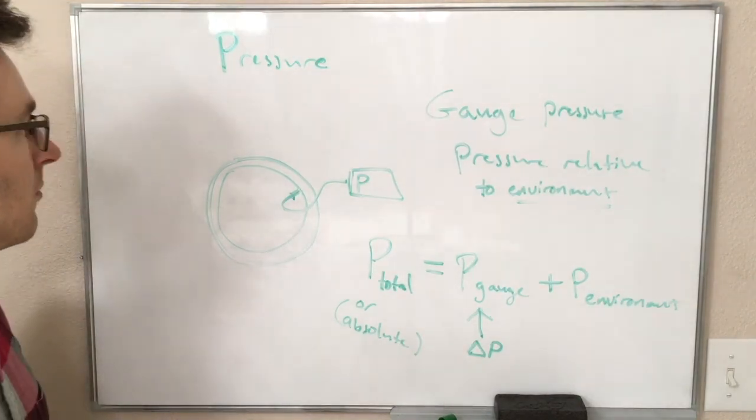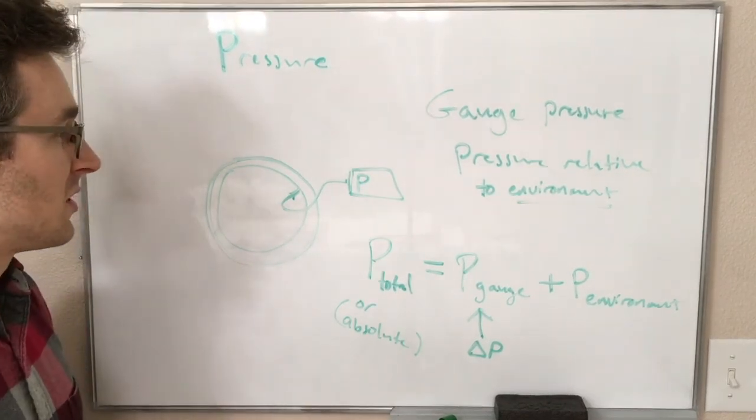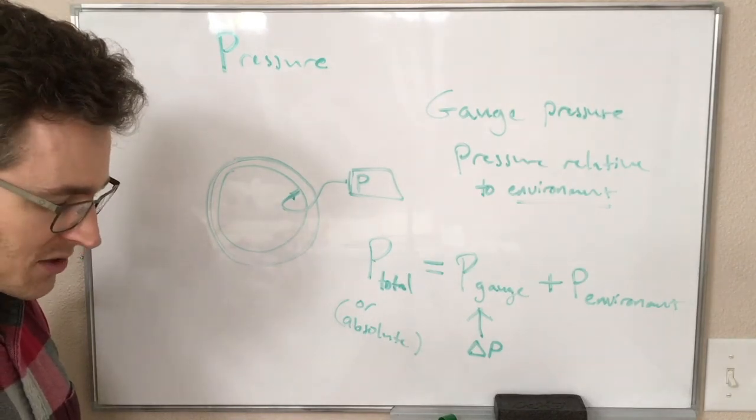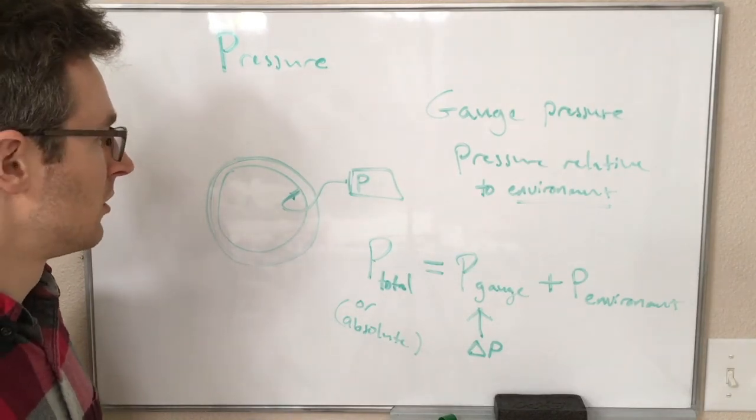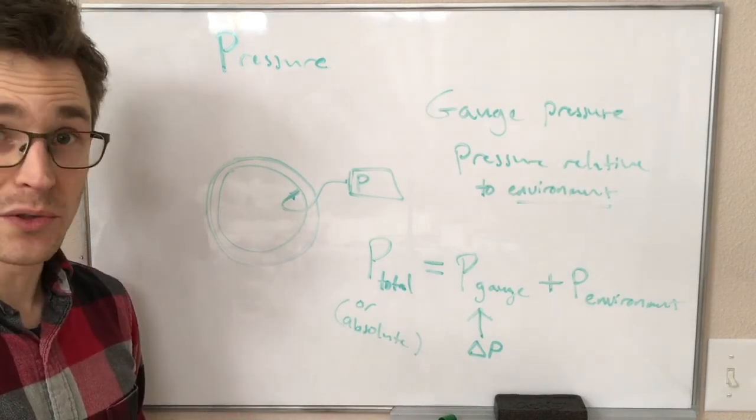I think that's all I had to say about that. So now we have density and pressure, two variables we can use to describe what's going on with our fluids. And next we're going to talk about some actual physics and how these pressures can change as we move in fluids.